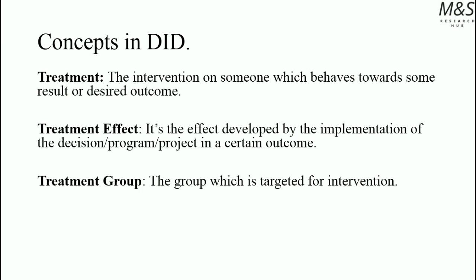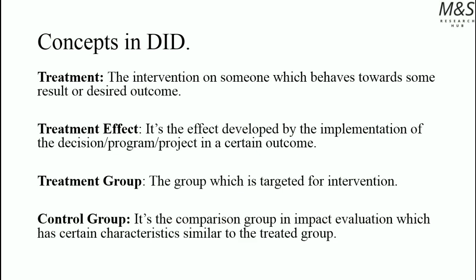The treatment group is the group which is targeted for intervention — this is the group we want to impact, to change welfare in order to improve it. The treatment group has certain characteristics. The control group is the comparison group that we use as a counterfactual, when we know that the impact evaluation is given under certain characteristics similar to the treated group. It's basically a group with characteristics very similar to the treatment group, but it was not treated — that's the biggest difference.